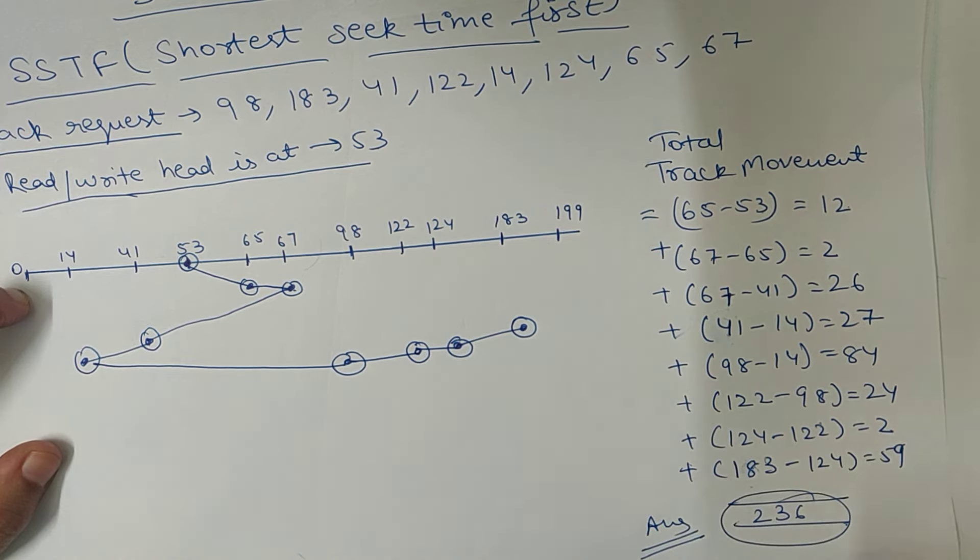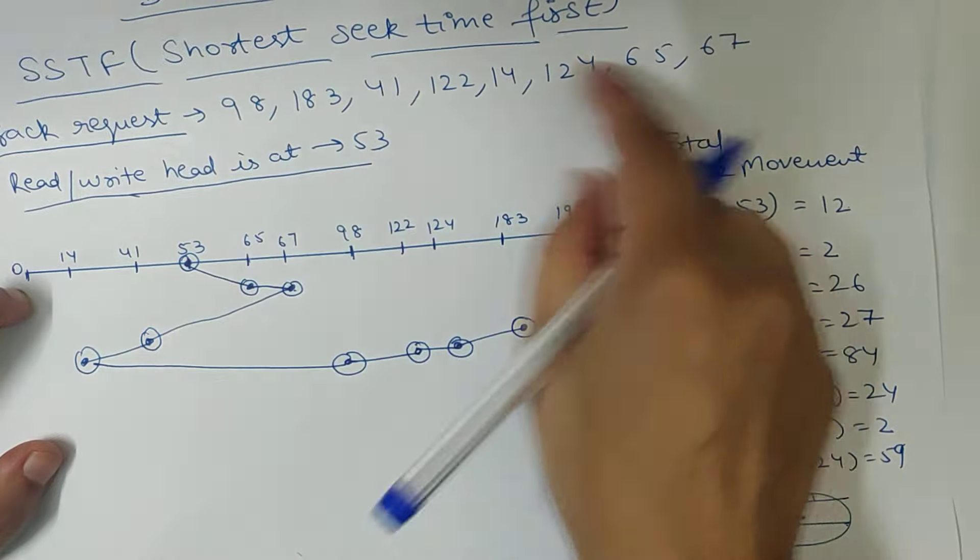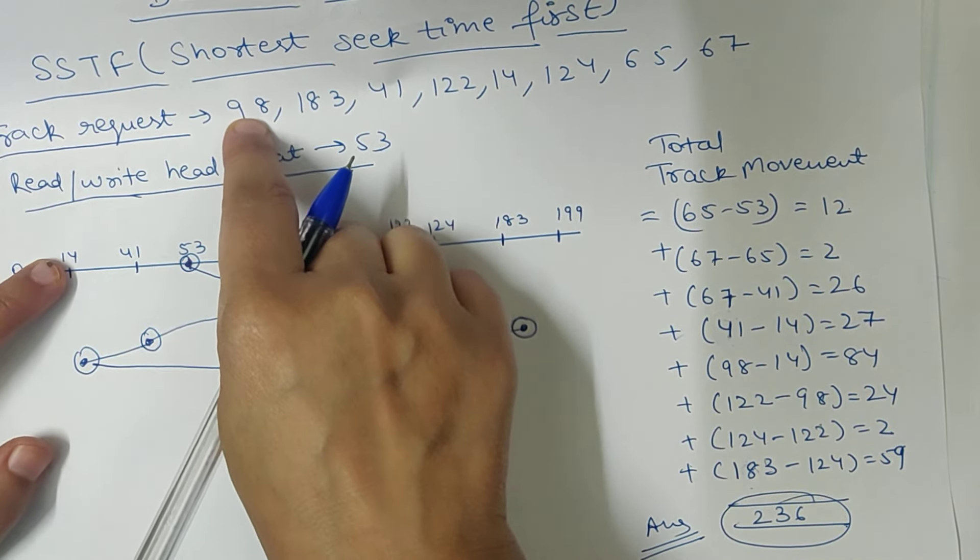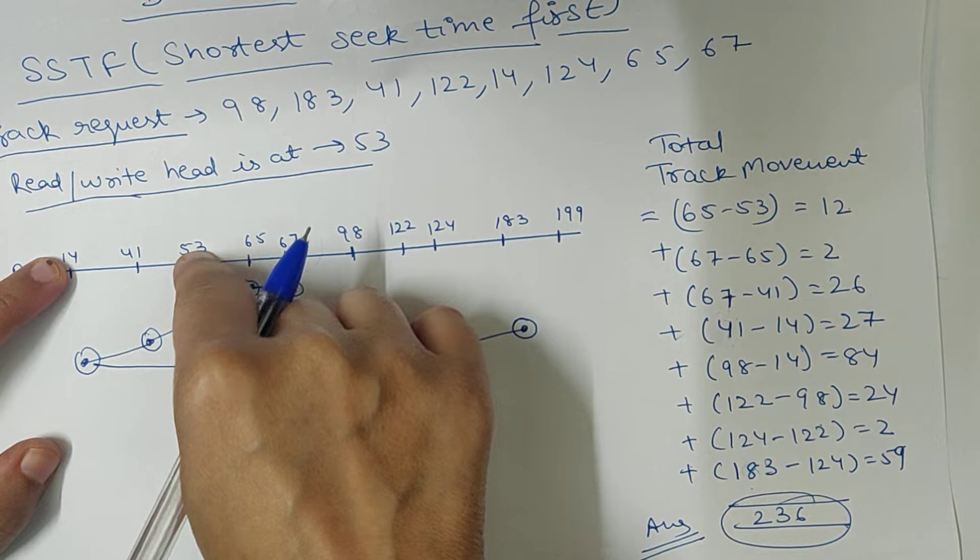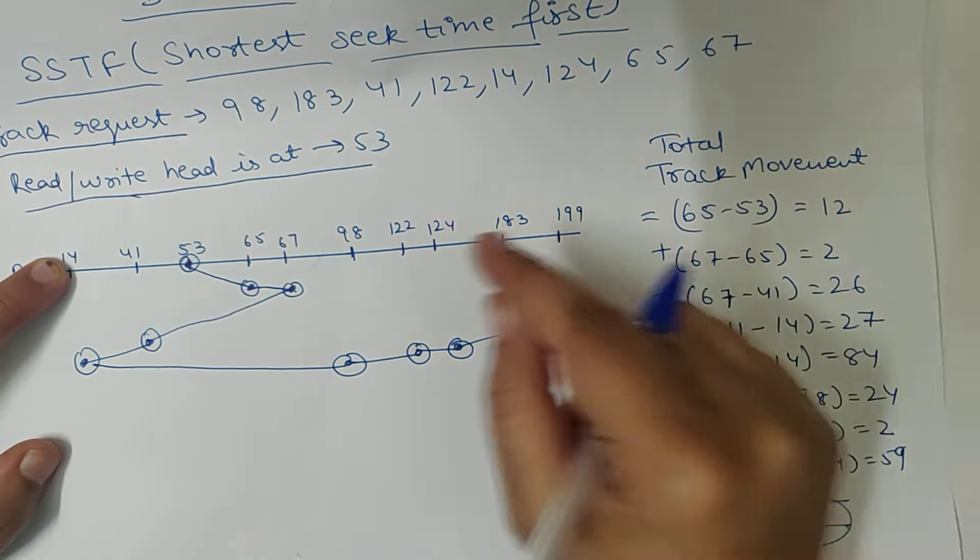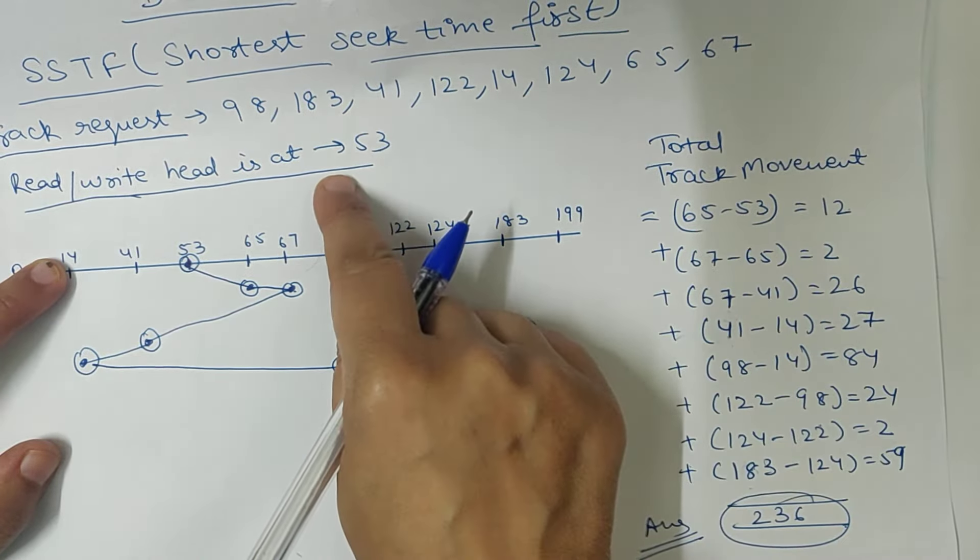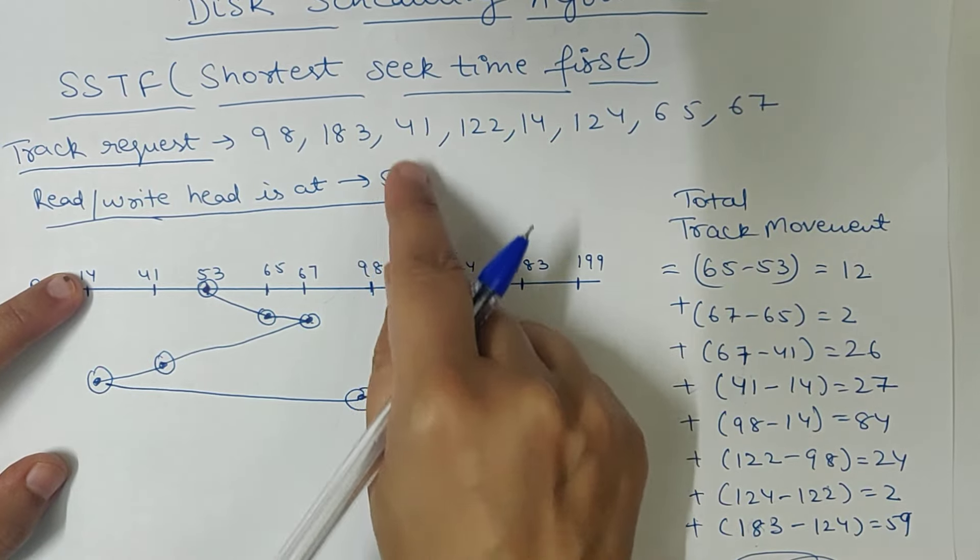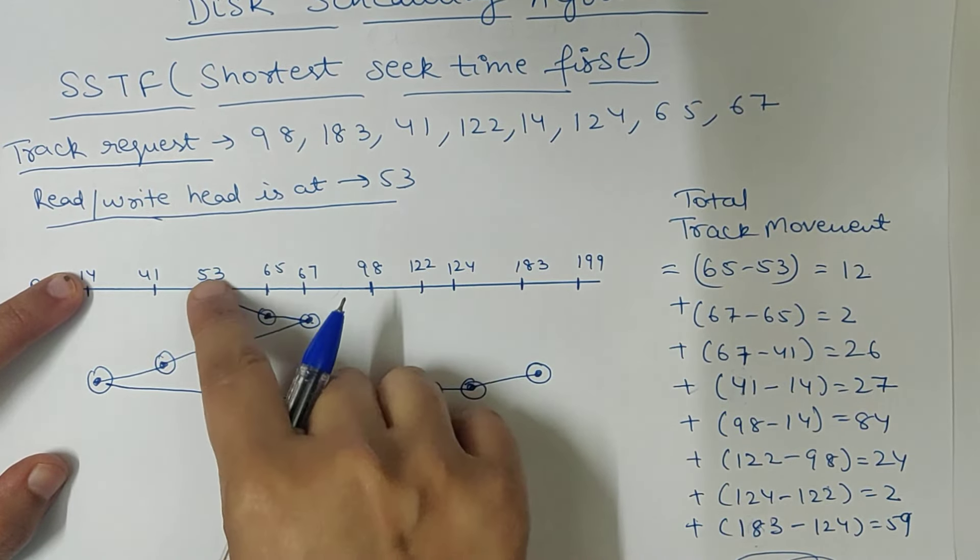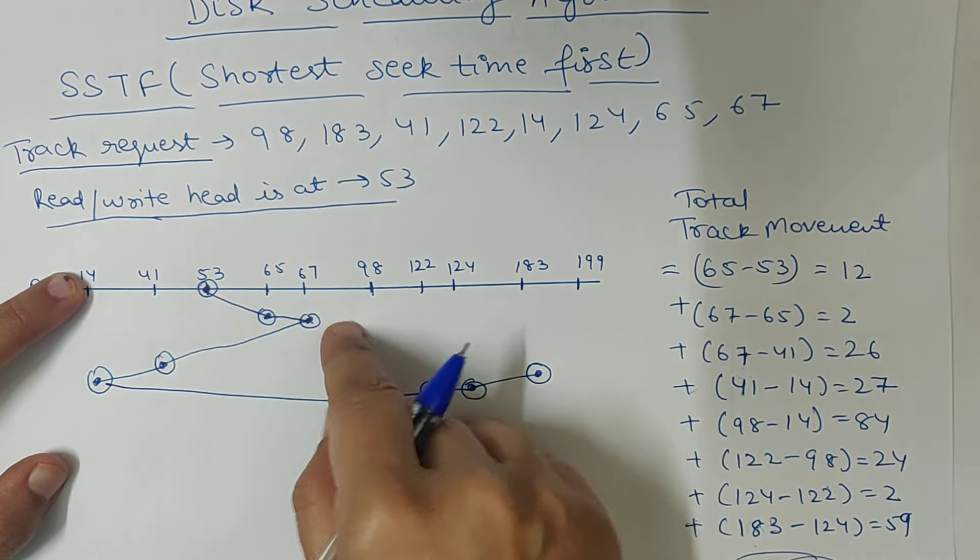So, basically, FCFS, what does it mean? Whatever the request comes first, we have to fulfill it. If it comes before 98, then we have to fulfill it before 98. Our track can be anywhere. Read-write head anywhere. But SSTF, what does it mean? If your head is near 53, which is near 53, you can fulfill it first.